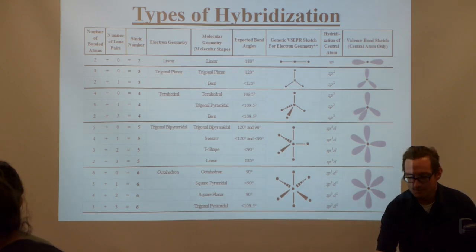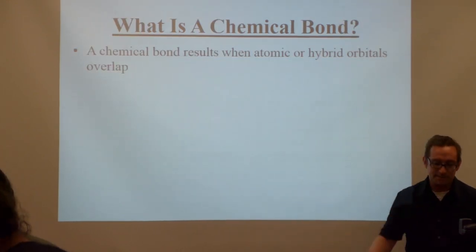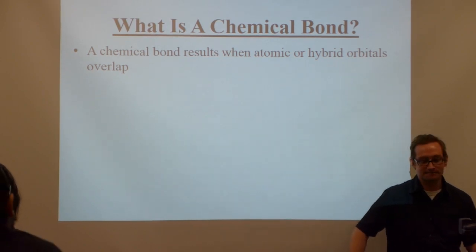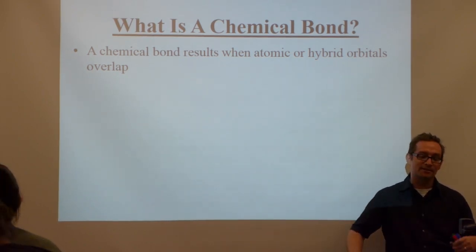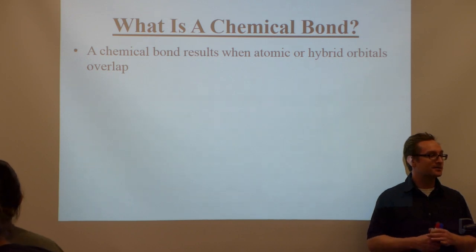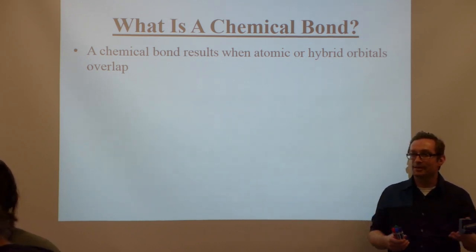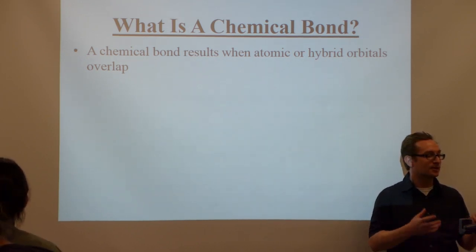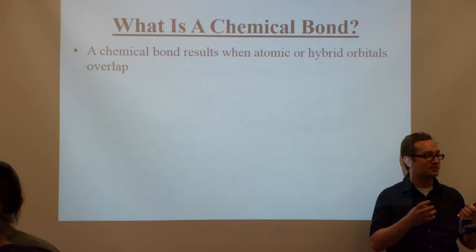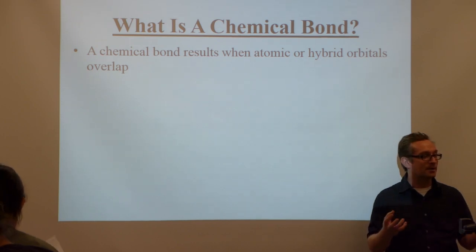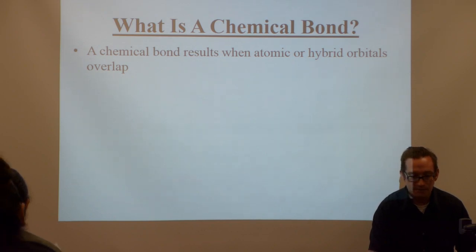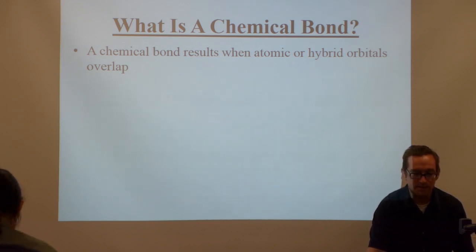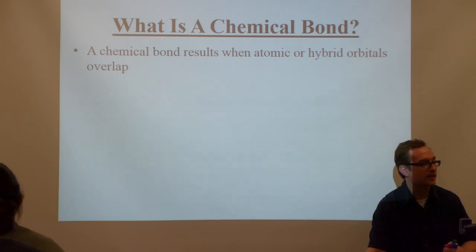What is a chemical bond? It's two electrons being shared between two atoms, but what bonding is involved? When a chemical bond results, it happens when you get atomic or hybrid orbital overlap.